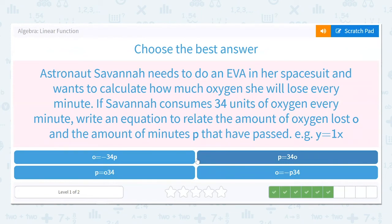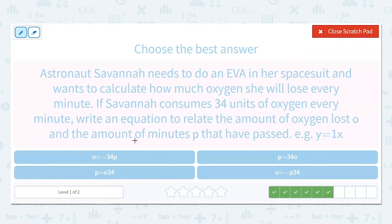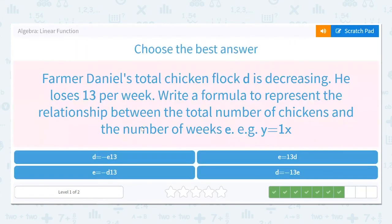Astronaut Savannah needs to do an EVA in her spacesuit and wants to calculate how much oxygen she will lose. It's once again going down every minute. If Savannah consumes, so she's using it, it's going down, 34 units of oxygen every minute, write an equation to relate the amount of oxygen lost, O, and the amount of minutes, P, that have passed. So the total amount of oxygen lost is O. She's losing, consuming, 34 units per minute, and the number of minutes that have passed is P. So very similar to the other ones, O equals negative 34P. Now, once again, this is the same mathematically, but not technically noted the correct way. Coefficient first, negative 34P. So we're going to go with this first option here.